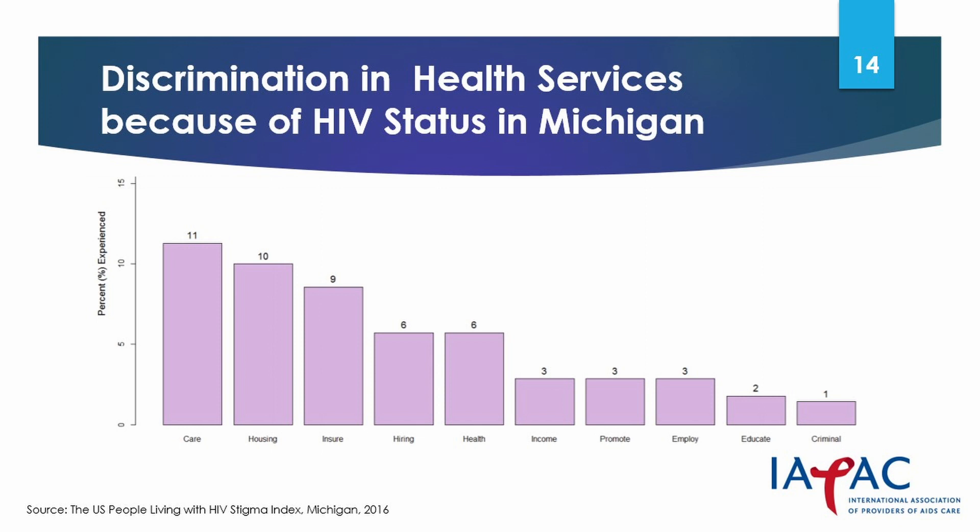Here's an example of stigma and discrimination from the United States. This survey was conducted as part of the US People Living with HIV Stigma Index in Michigan in 2016. It revealed the most common manifestation of stigma and discrimination was denial of health care services. This was closely followed by housing discrimination, health insurance and employment. Overall, 9 to 11 percent of people reported discrimination in healthcare, housing and access to insurance because of their HIV status.